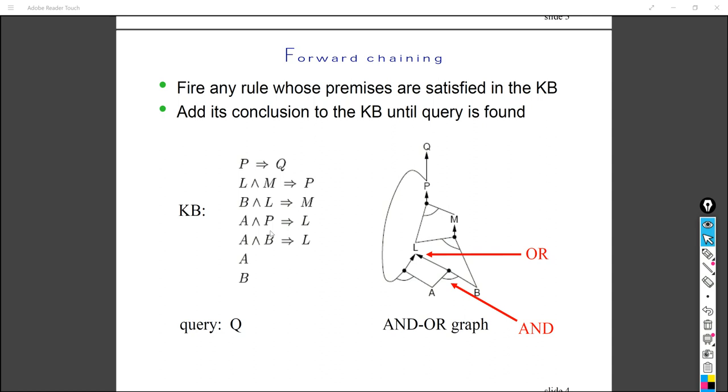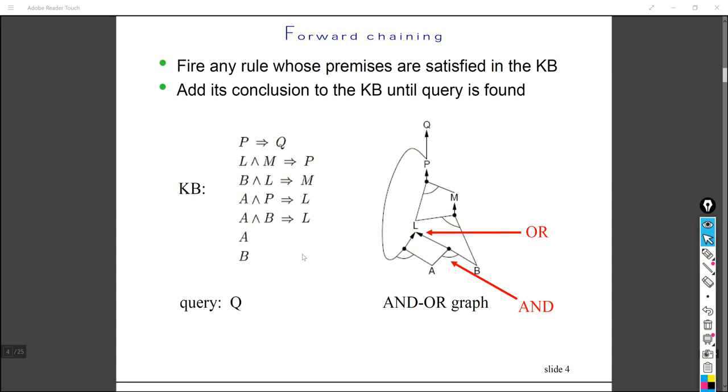So first, we just draw this tree according to our knowledge base. For example, if P then Q, and L AND M, then if L AND M then P. Please pay attention to some of the notations here. If you have an arrow and you draw a line like this, then this is actually an AND sign. If there is nothing here, then it's OR. Just pay attention to that.